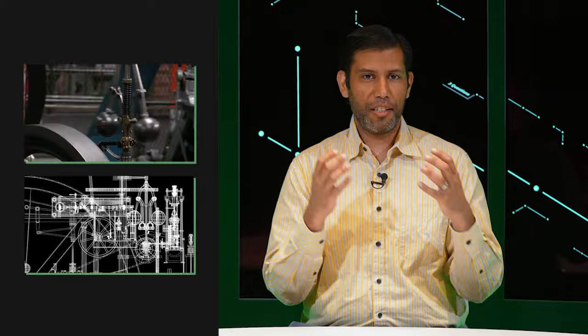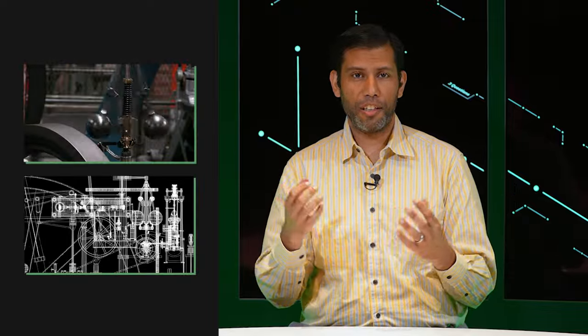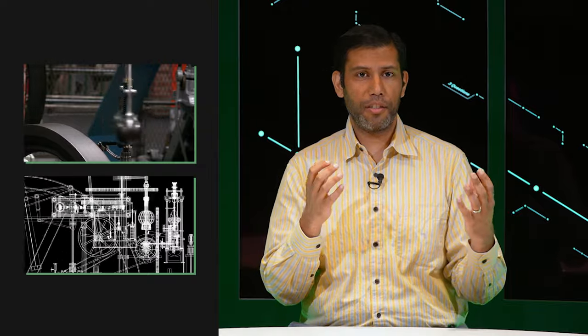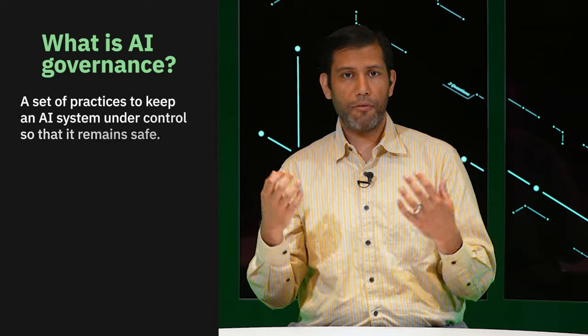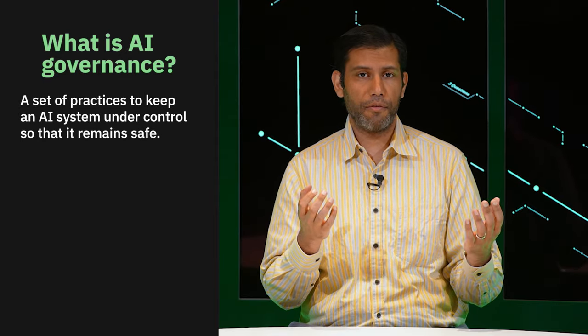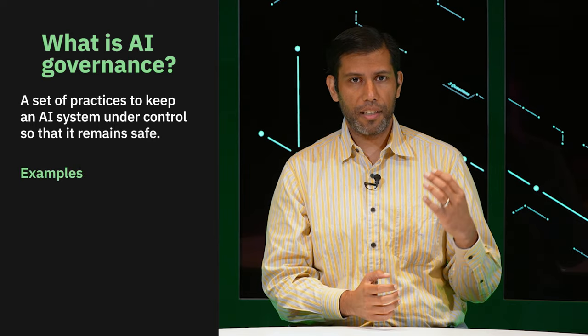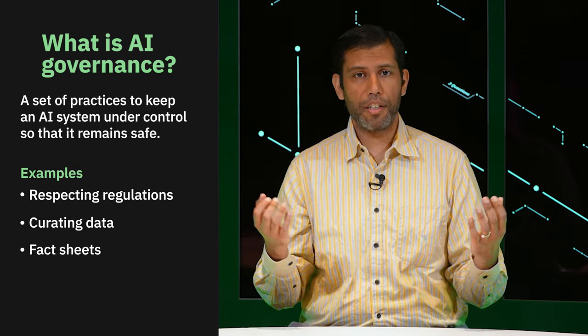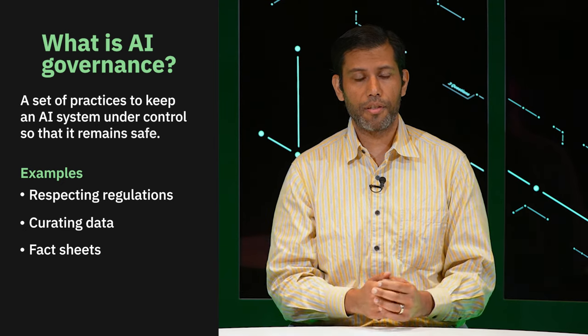Governance is an interesting word — it means control. If we think back in history, steam engines had a part called the governor that regulated the flow of steam to make sure the system remained safe. When we say AI governance, it's the set of practices to keep an AI system under control so that it remains safe as well. This includes things like respecting regulations, curating data, and creating fact sheets that explain how the system works.